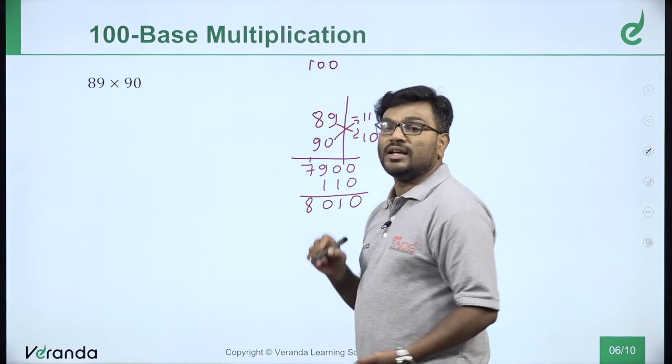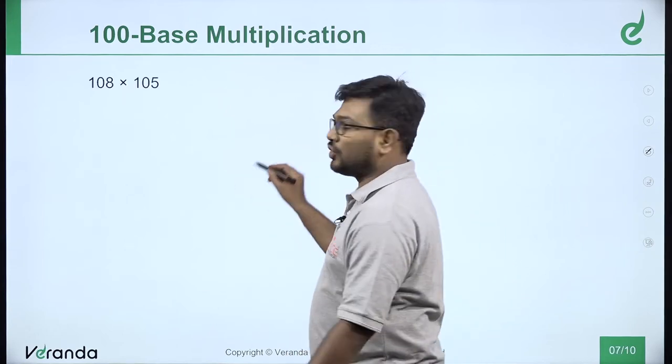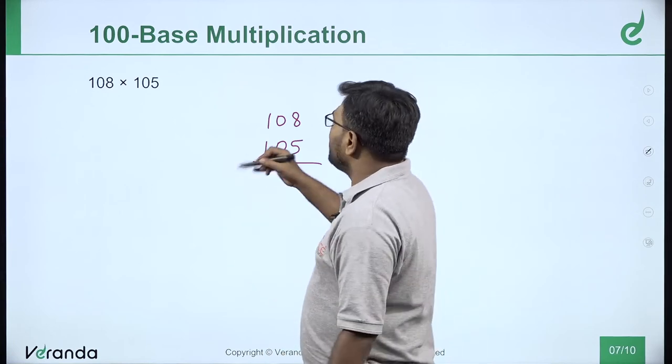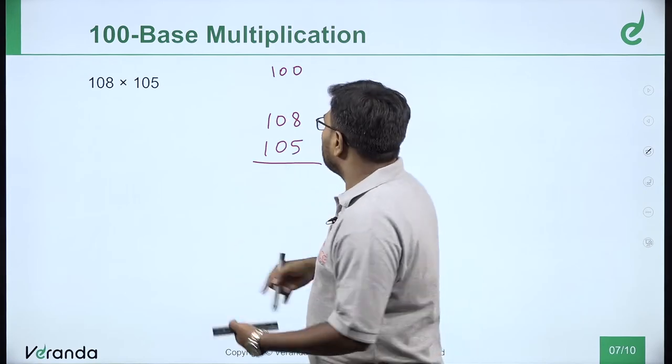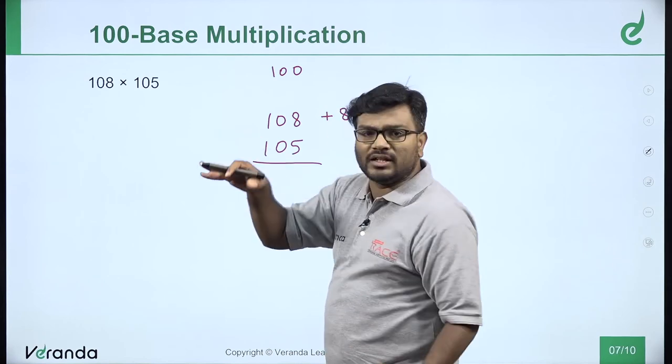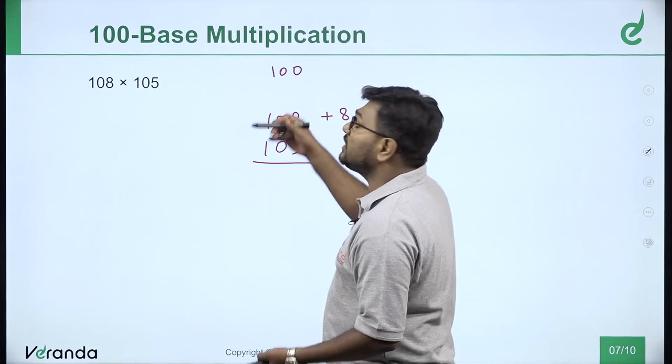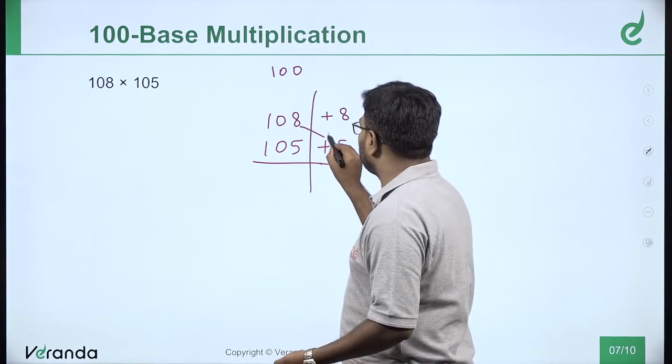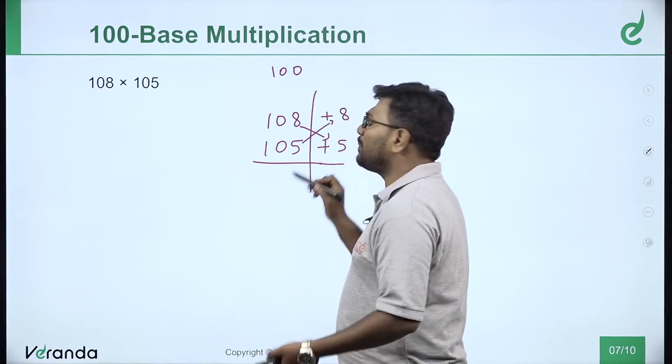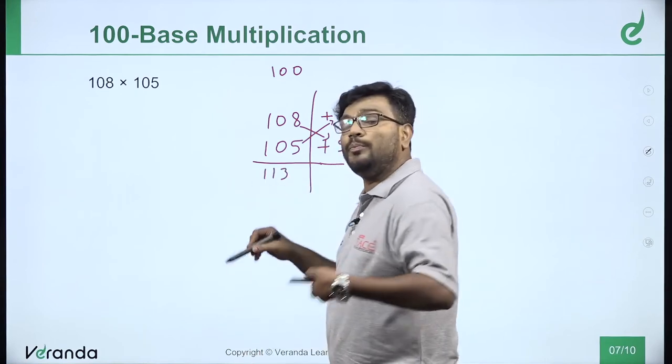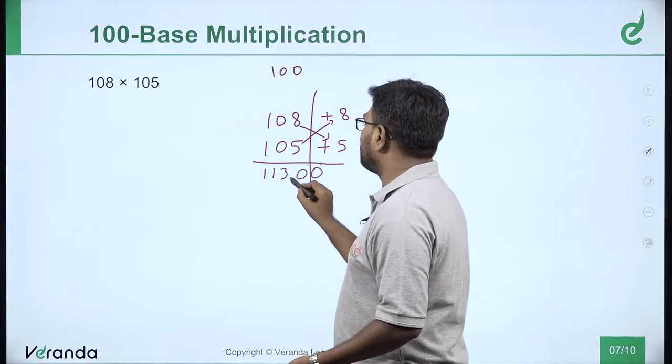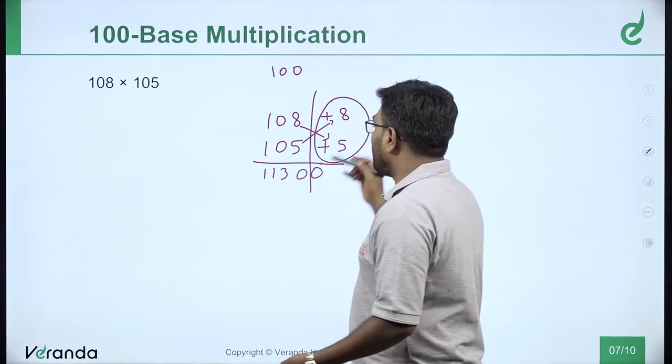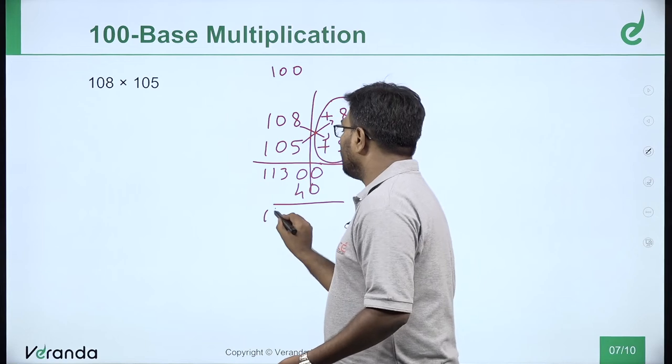Another question: 108 into 105. Same 100 base, but these are extra from 100. 108 is plus 8 extra, 105 is plus 5 extra. Same method: 108 plus 5 gives 113, 113 into base, 113 into 100 equals 11300. After that, multiply differences: plus 8 into plus 5 equals 40. Answer is 11340.